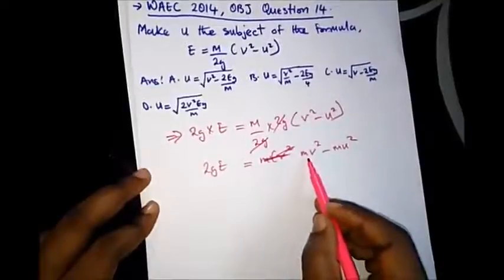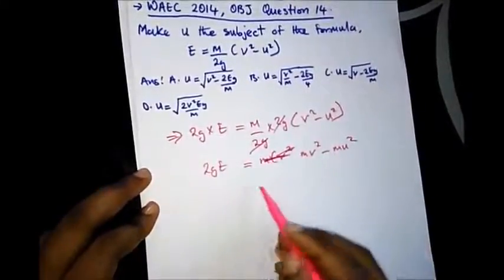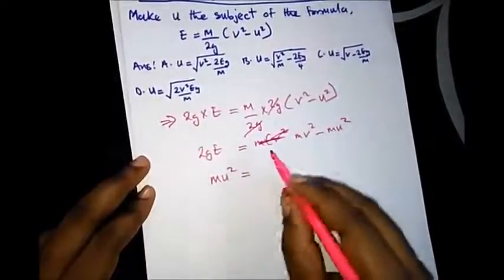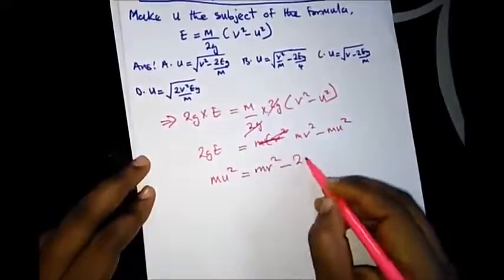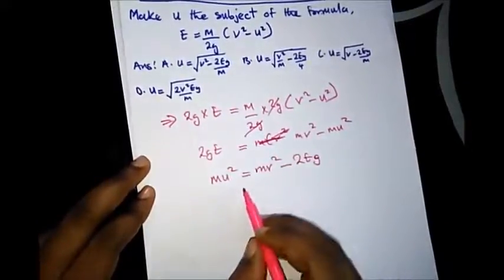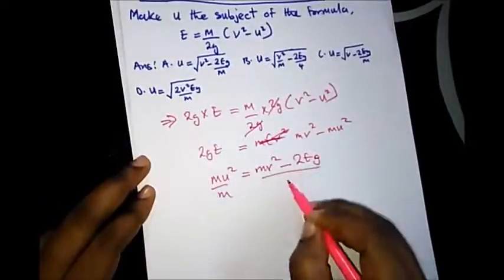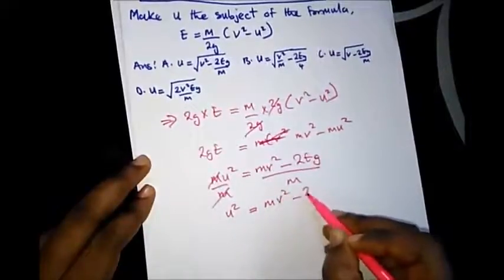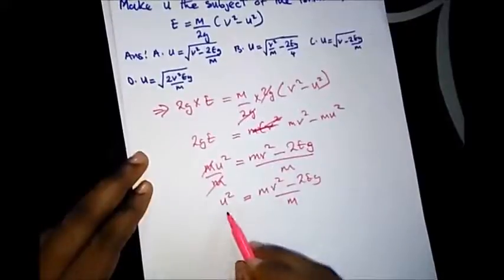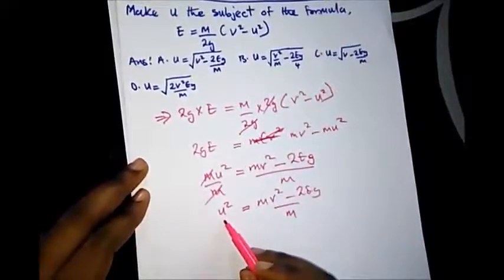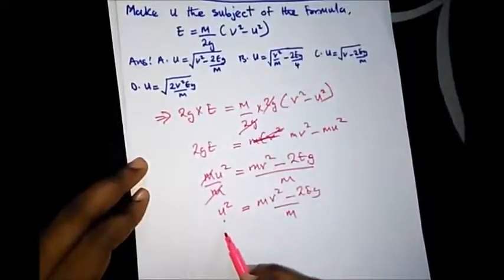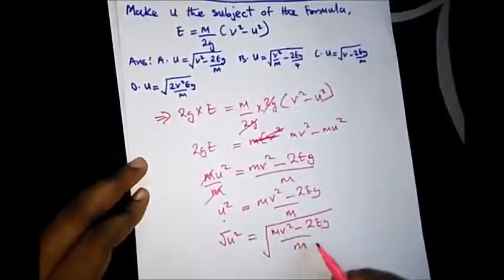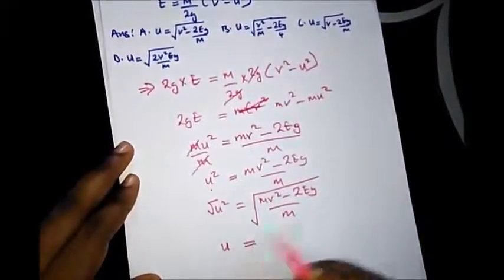Let's open this bracket immediately: we have MV squared minus MU squared. We bring MU squared to the other side — it becomes positive — and bring 2GE to the other side, giving a negative sign: MU squared equals MV squared minus 2GE. We then divide both sides by M, leaving U squared equal to MV squared minus 2GE over M. To remove the square on U, we square root both sides, leaving U is equal to the square root of MV squared over M minus 2GE over M.